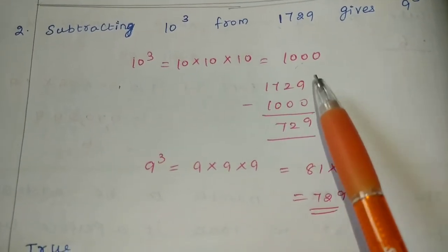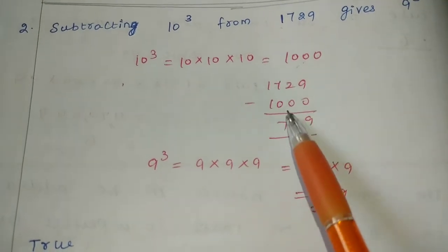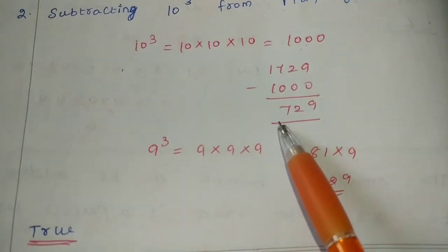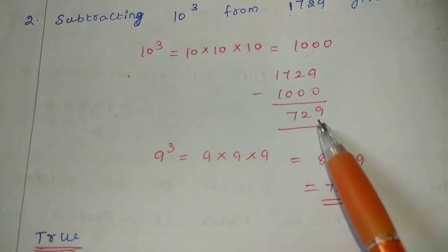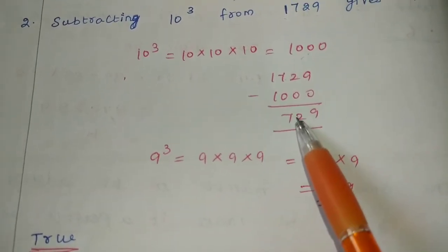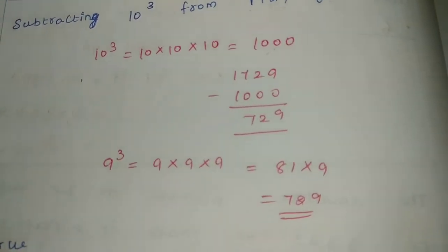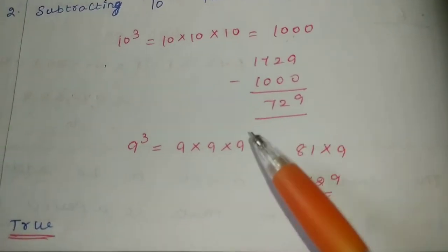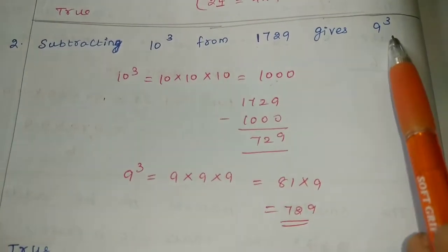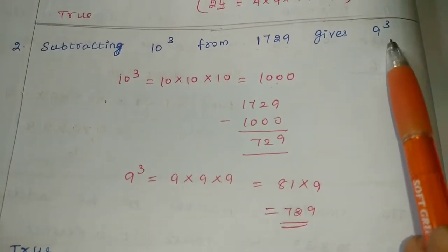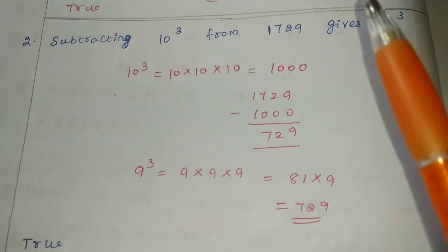Subtracting: 9 minus 0 is 9, 2 minus 0 is 2, 7 minus 0 is 7 — so the answer is 729. And the cube root of 729 is 9, so 9 cube is correct. The statement is True.